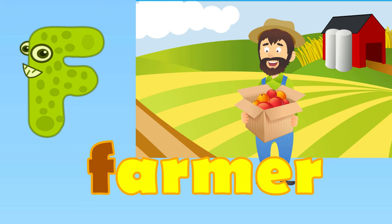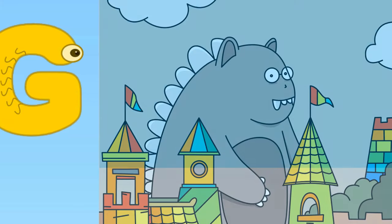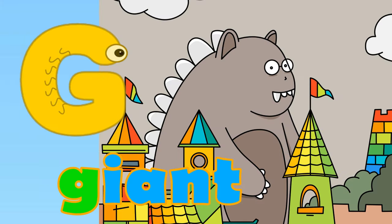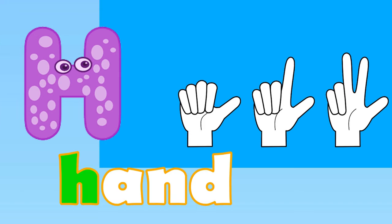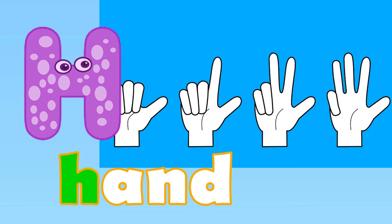Farmer. G is for giant. G, G, giant. H is for hand. H, H, hand.